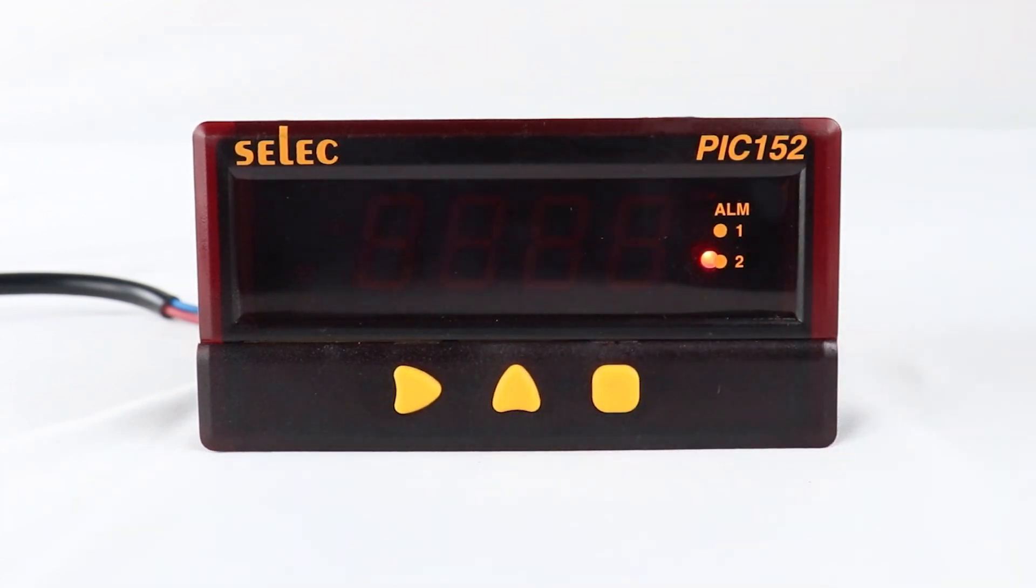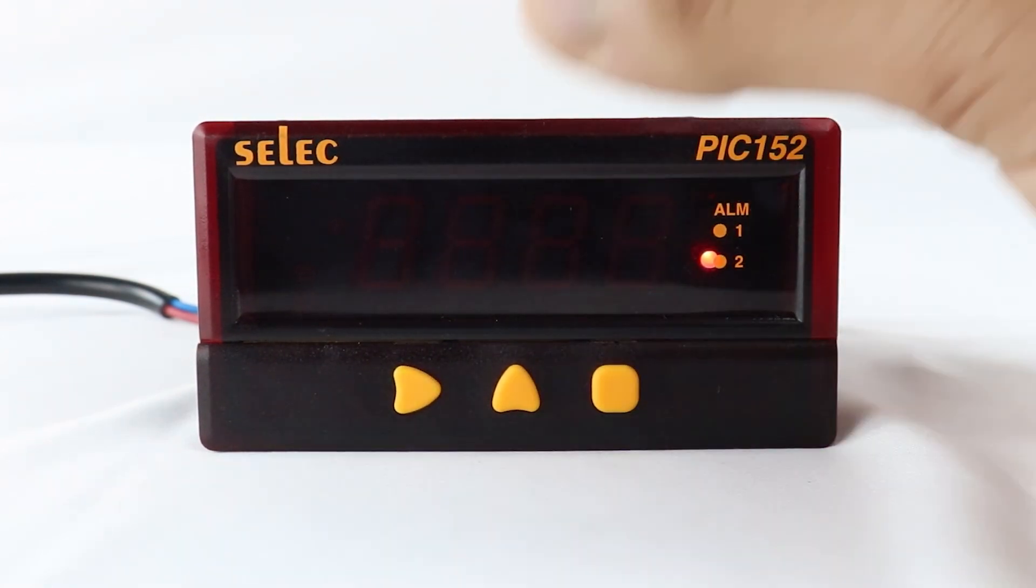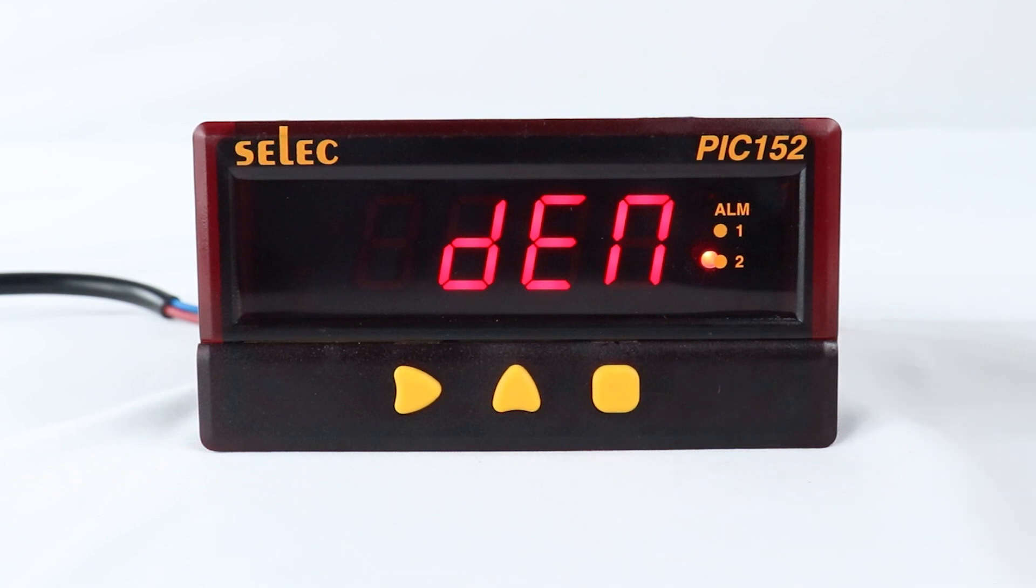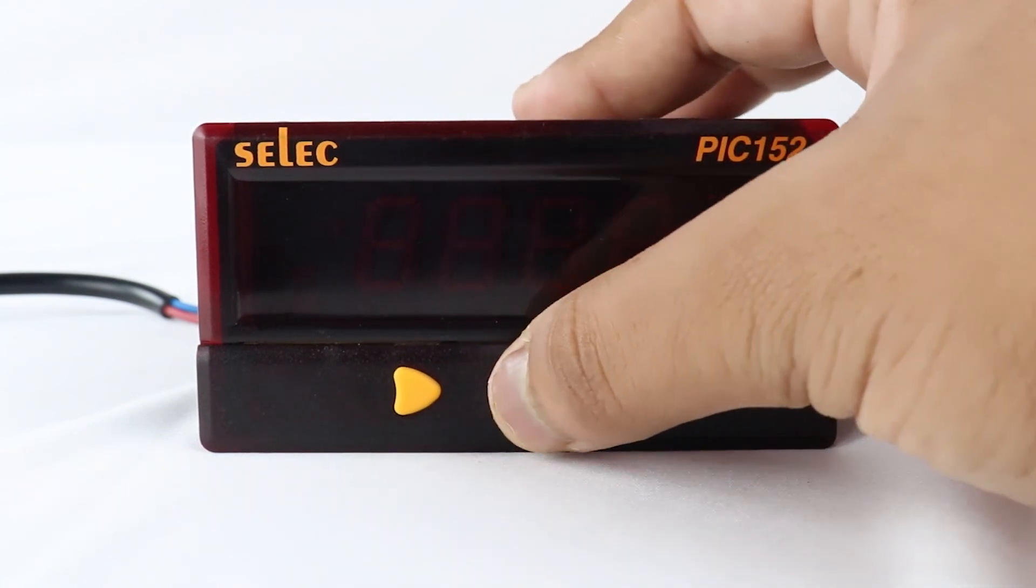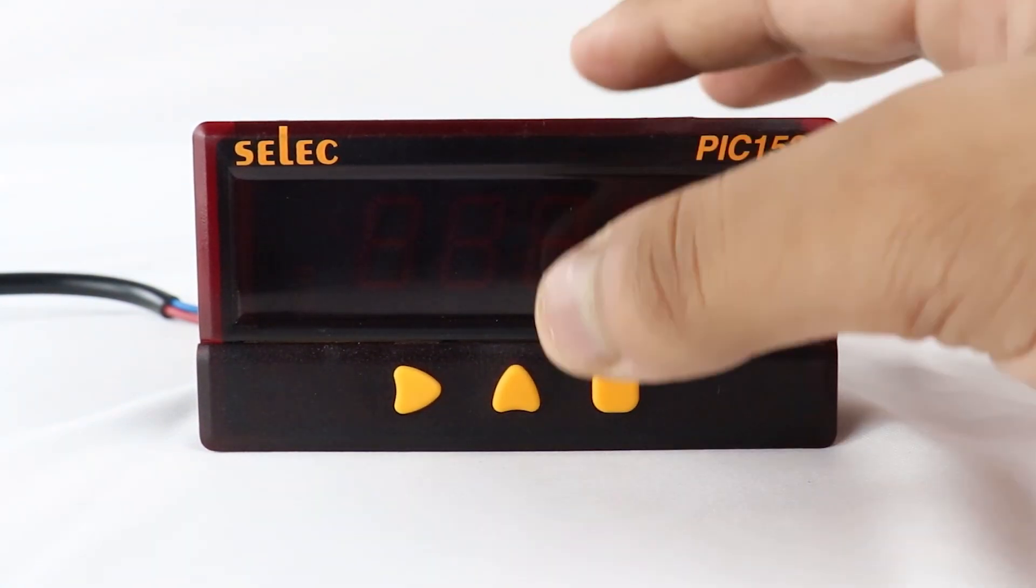Then, press square key to select relay status for alarm 1. Using up arrow key, we can switch between relay energized or relay de-energized.